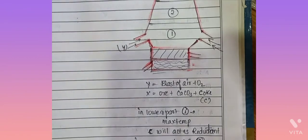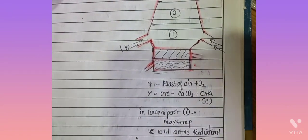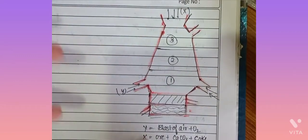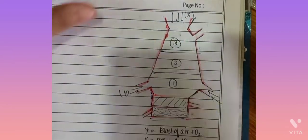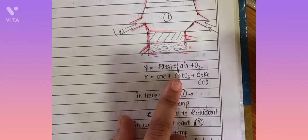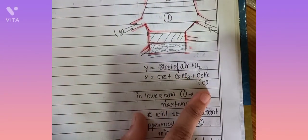Blast means at a very high temperature I am going to send air and oxygen. X is the ore which we have to add so they will react and we will get iron. X is ore along with limestone and carbon.